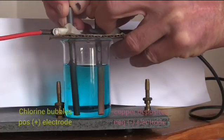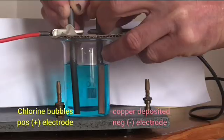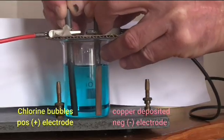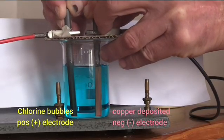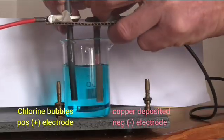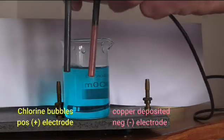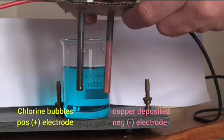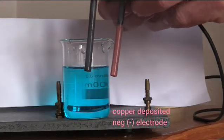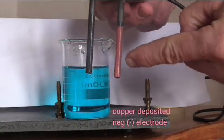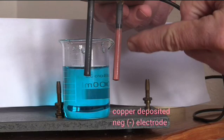So we still have the chlorine bubbles on the left and the copper at the negative electrode. You can see that characteristic browny color. It's clearer when I remove the electrodes. On the right we have a deposit of copper on the negative electrode.